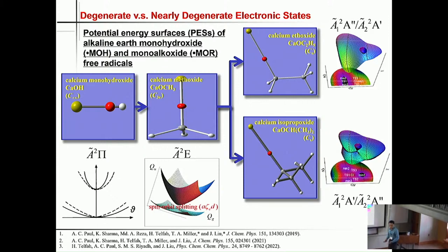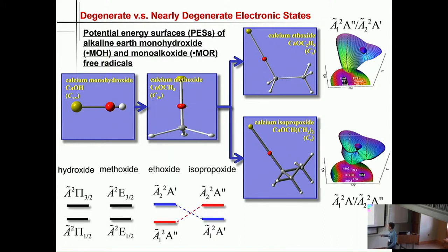All these molecules have very complicated and peculiar potential energy surfaces. The upper and lower components of the A-state meet at the so-called conical intersection. Just like in calcium CaOH, these two potential energy surface sheets are also separated by the spin-orbit splitting. Another interesting thing is going from ethoxide to isopropoxide — the symmetry of the electronic wave function actually swaps from A double prime to A prime and vice versa.